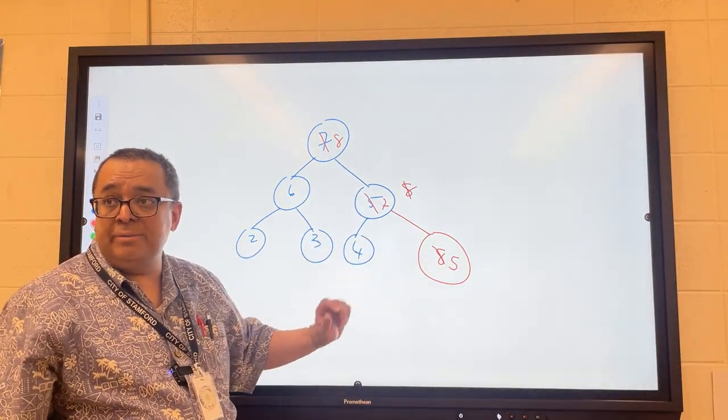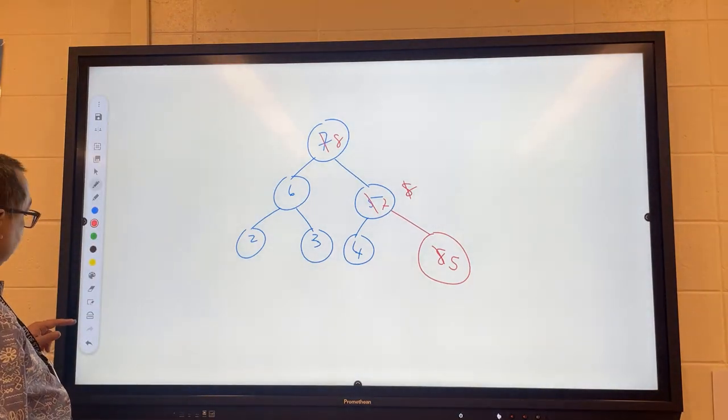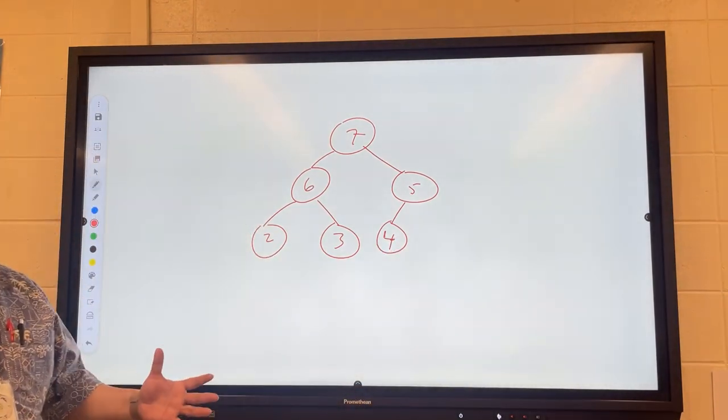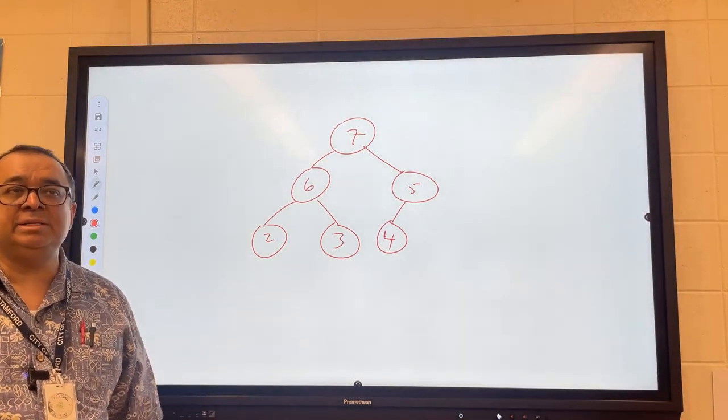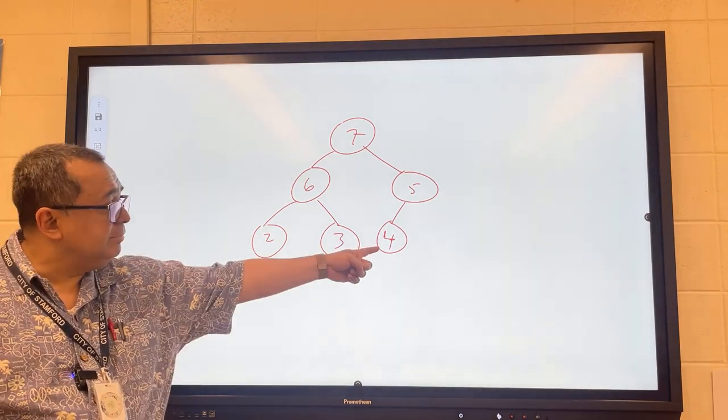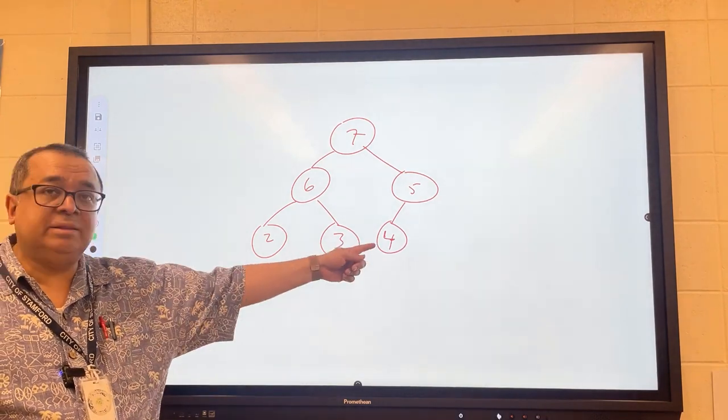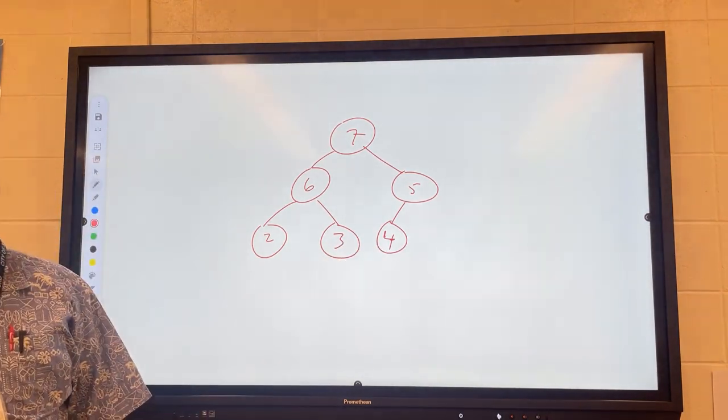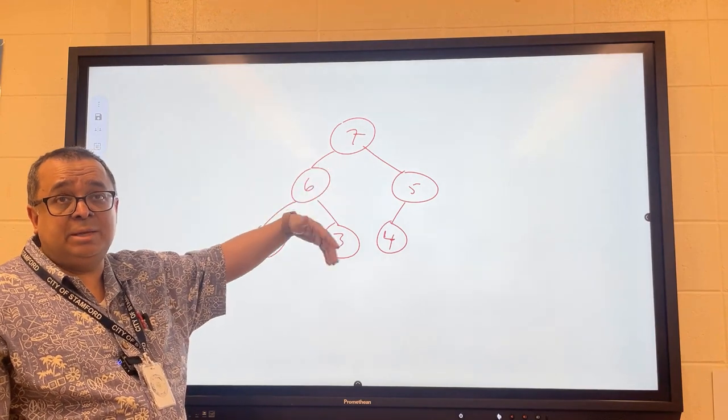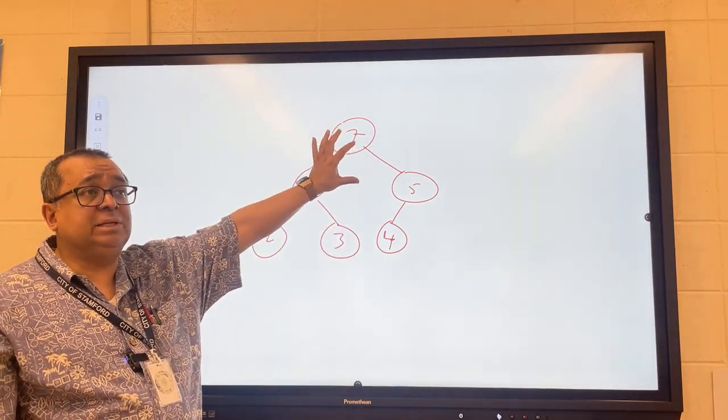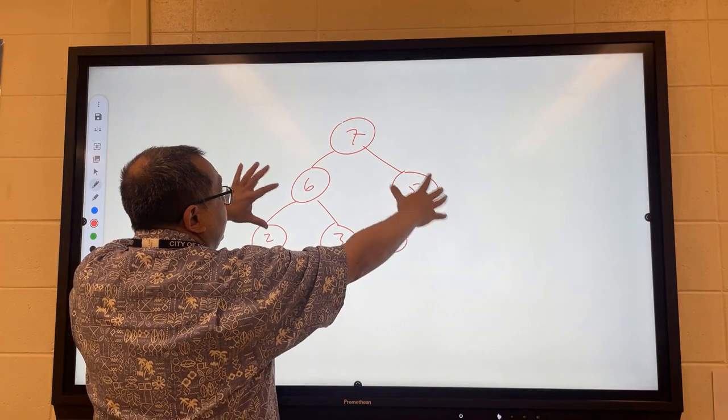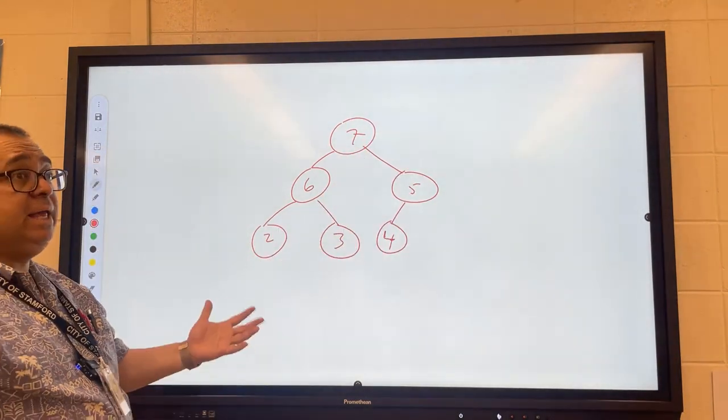Now let's look at deletion. This is the same heap we started with. The heap is built so one particular node can easily be deleted. What node is that? The root node, because we're often using this as a priority queue. When we pull the queue, we pull out the biggest number in a max heap or smallest in a min heap. The problem is if I just delete the root node, I have these two sub-heaps floating in space.